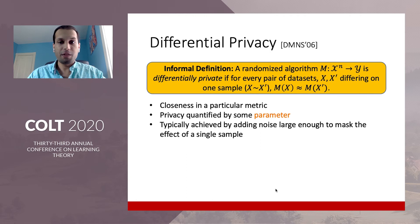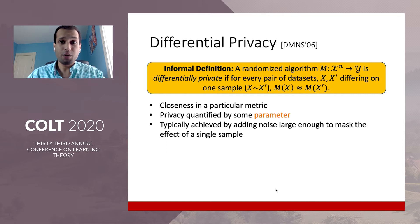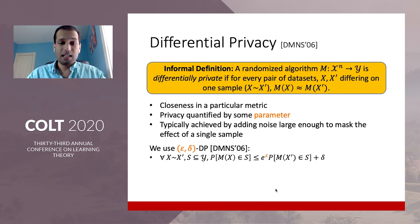More formally, we want our algorithm to be differentially private, which means that for any pair of datasets which differ on at most one sample, the output distributions of our algorithm on the two datasets, MX and MX prime, should be close in some particular metric. This sort of privacy is usually quantified by some parameter, and is typically achieved by adding random noise large enough to mask the effect of any single sample in the worst case — what we call the sensitivity of the function we're computing. The closeness notion I'll use in this talk is the well-known Epsilon Delta differential privacy.